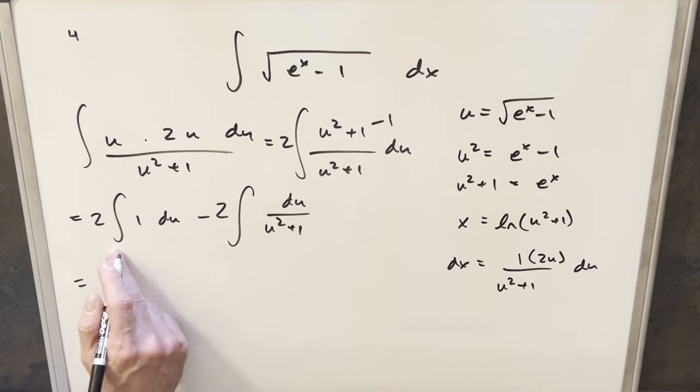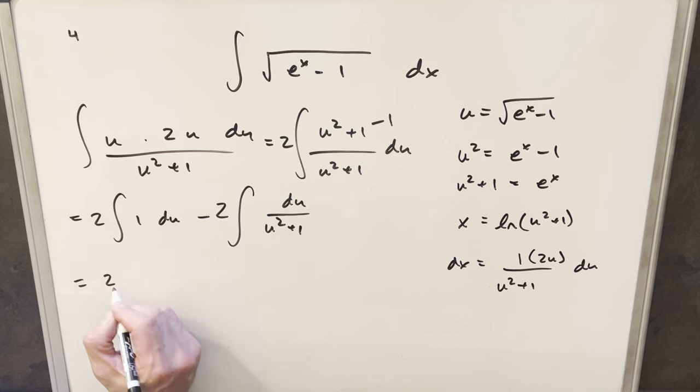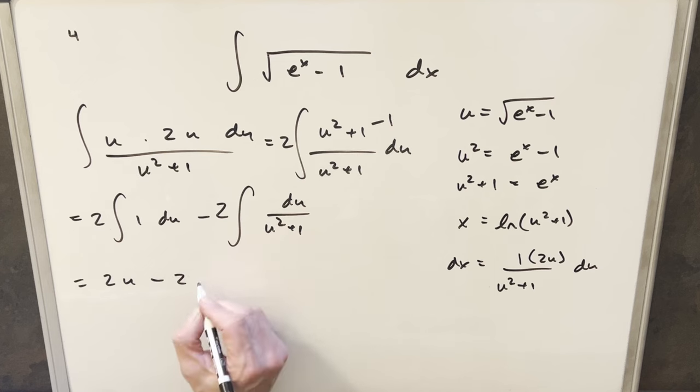So we'll just go ahead and integrate now. So integrating one is going to be u, so we're going to have two times u here, minus two. This here is just going to be arctan. So what we get is we're going to have just arctan of u.